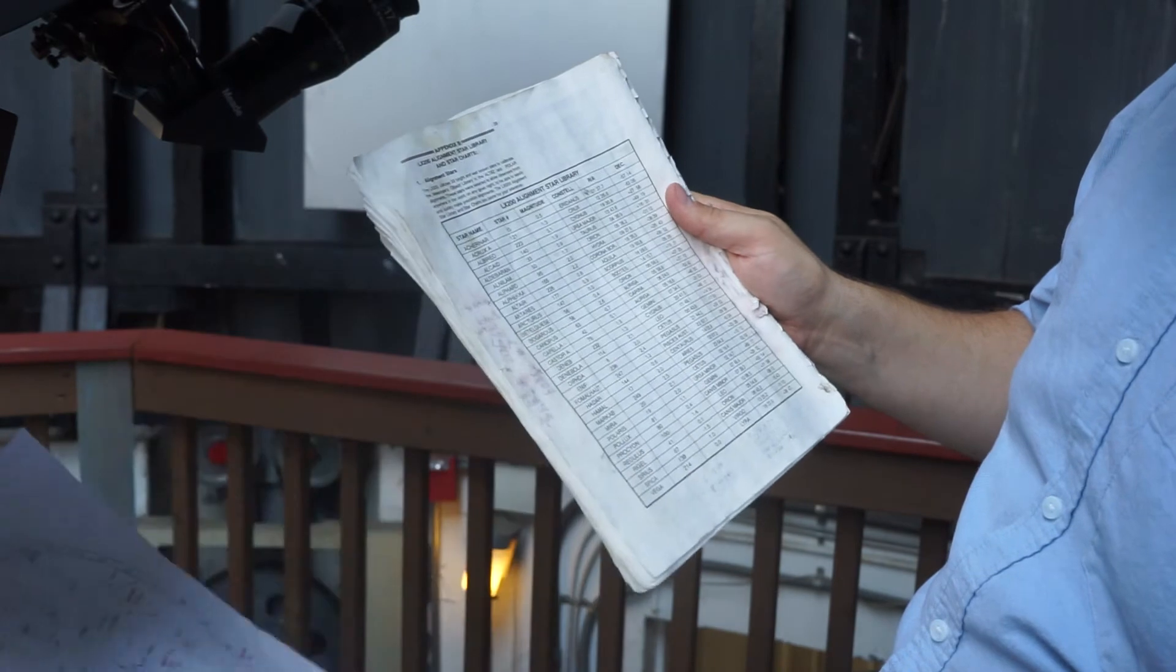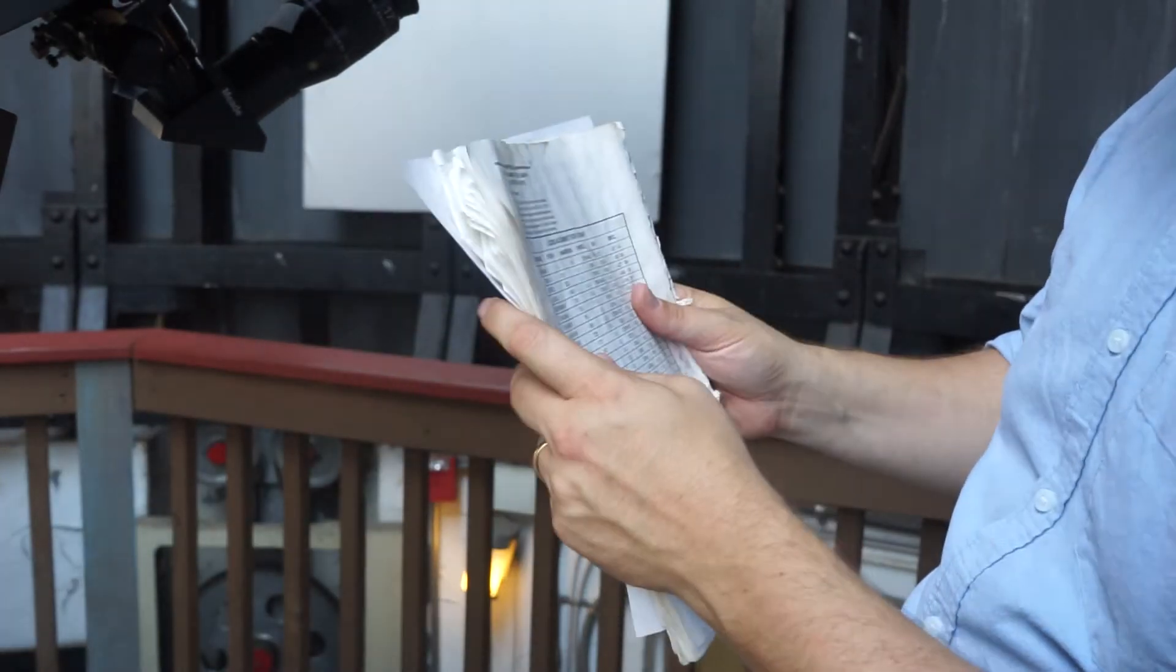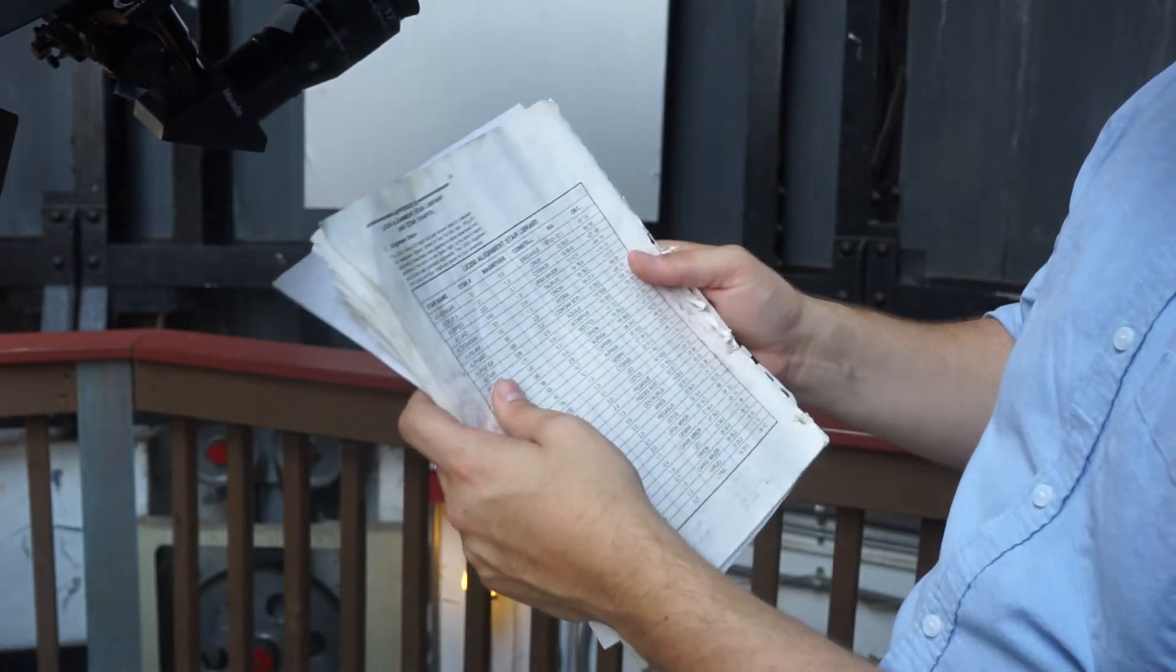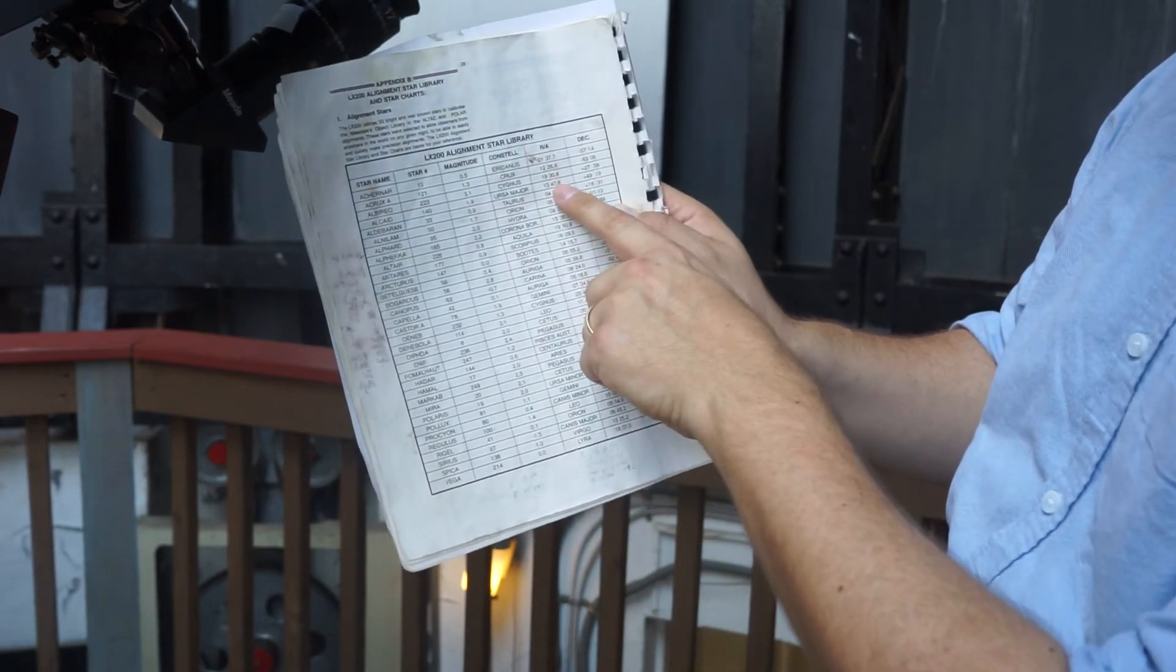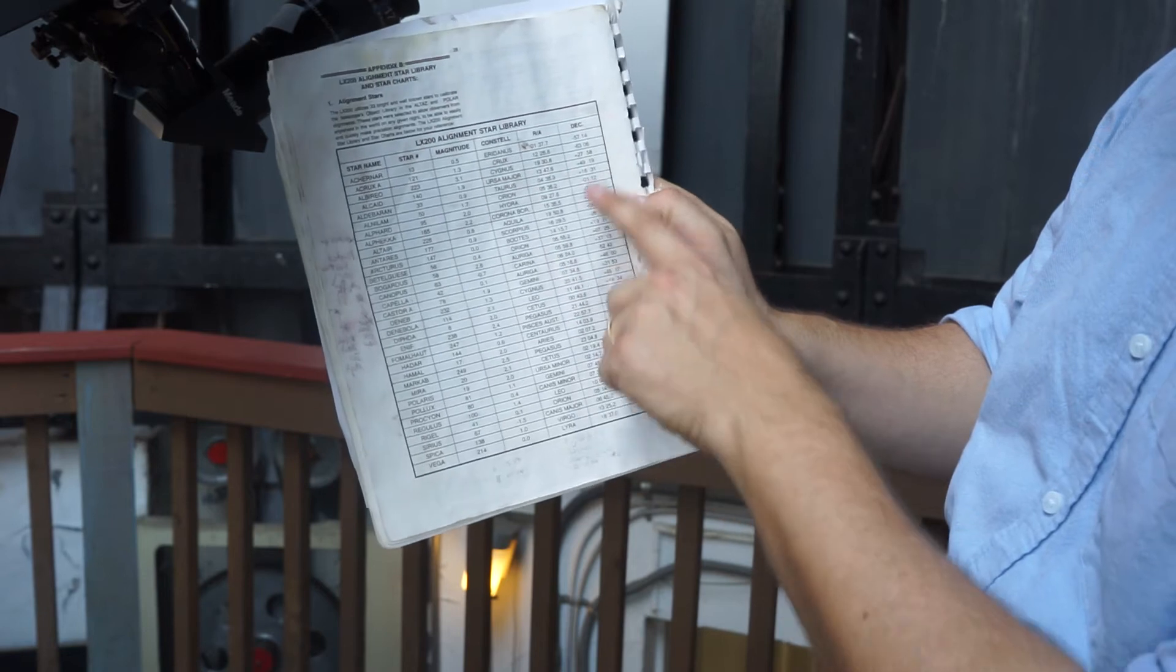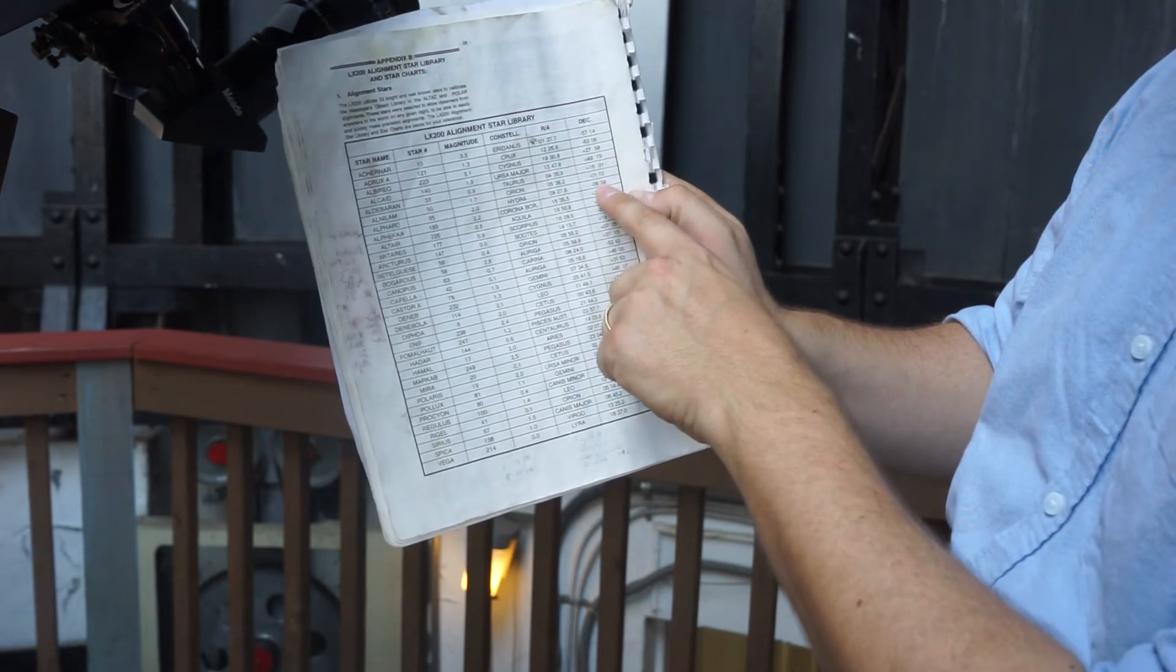You could also use the current sidereal time to determine what stars are visible. Run a web search for what the sidereal time is, then check the list for stars that have right ascension within four hours of the current time. They also need to have a declination greater than zero, and the higher the better.